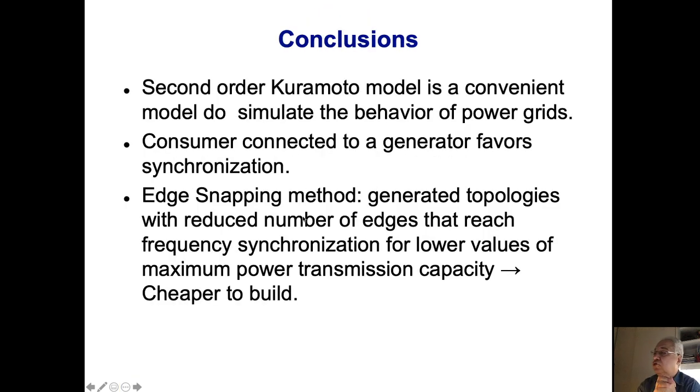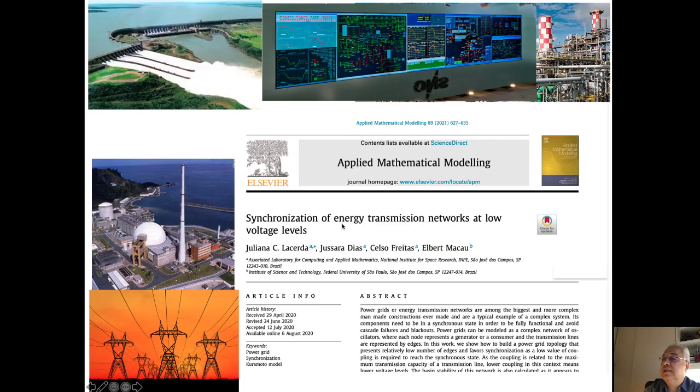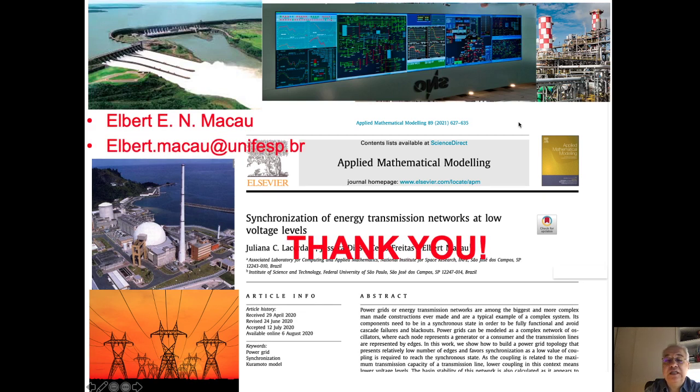In conclusion: the second-order Kuramoto model is a convenient model to simulate power grid behavior. Connecting consumers to generators favors synchronization, and we need connections between nodes with very dissimilar frequencies. This method is very good for generating topology that favors synchronization with low maximum power transmission. This result was published in this article available online. Thank you very much for your attention.